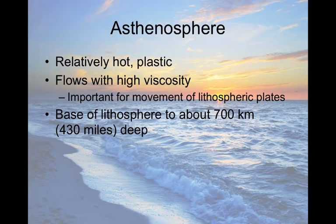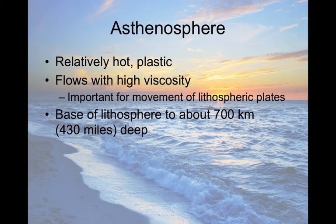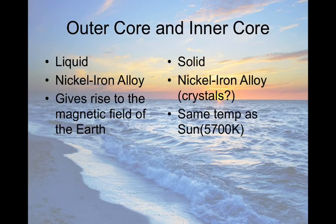The asthenosphere is the next layer toward the center. Physically it's a very hot section of Earth with very high viscosity — it flows. This is going to be really important when we talk about plate tectonics and how plates move. When we say "plastic" in physics, it means elastic. The asthenosphere is capable of moving; even rock, if hot enough, can flow. So the asthenosphere is a hot, plastic, high-viscosity material extending to about 700 kilometers down.